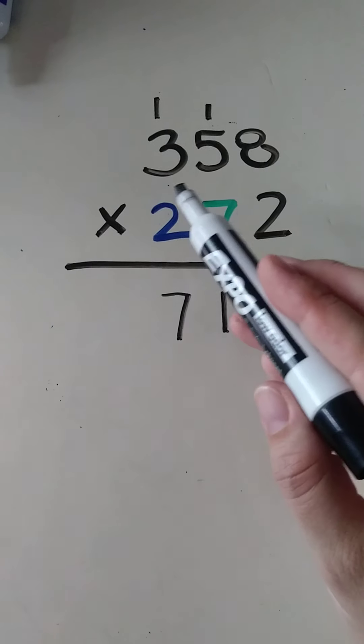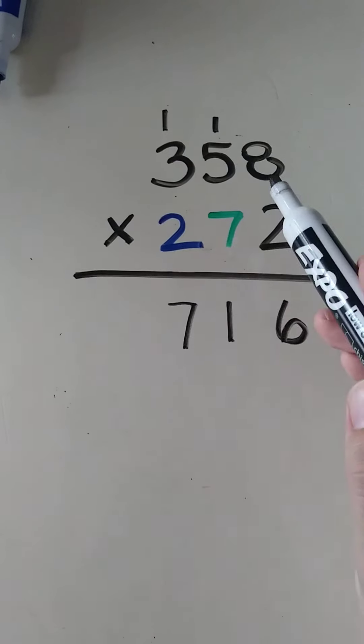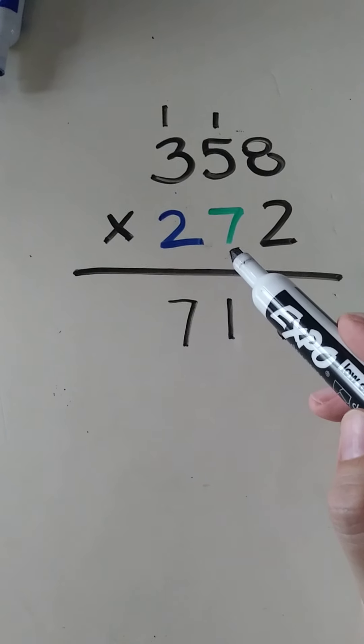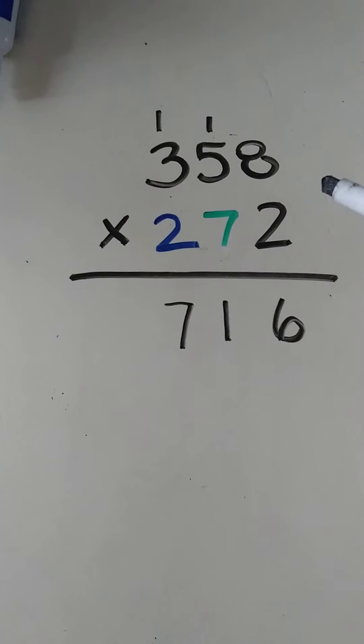So technically I'm not doing 358 times 7. I'm doing 358 times 70, because the 7 is in the tens place.